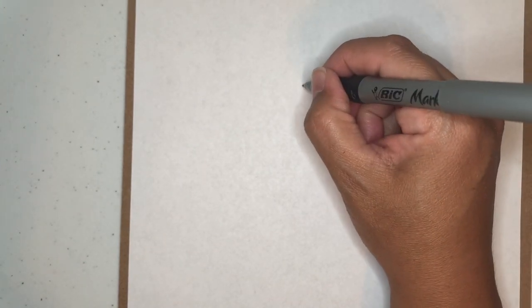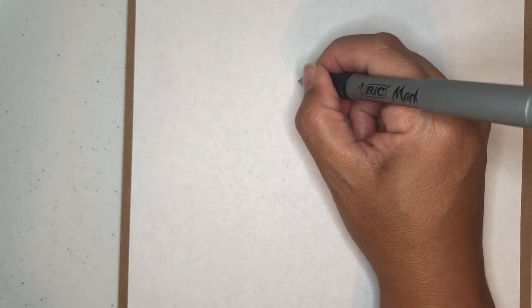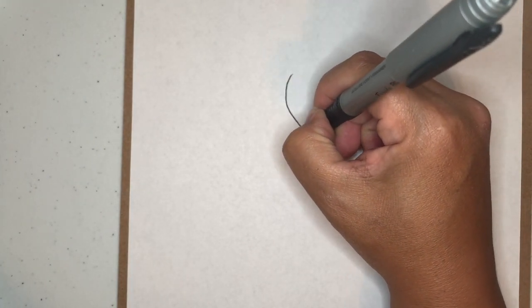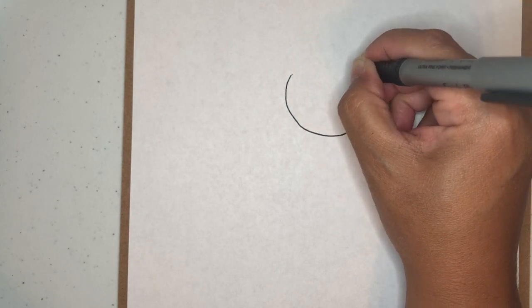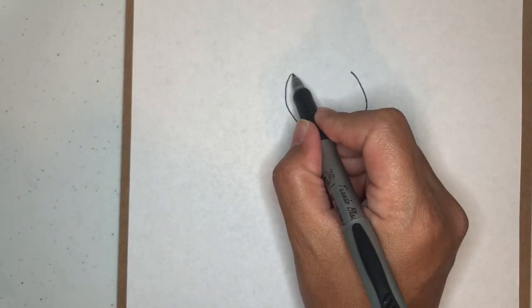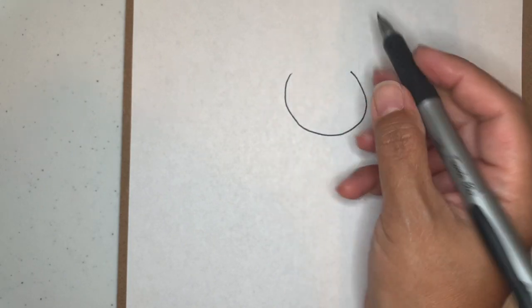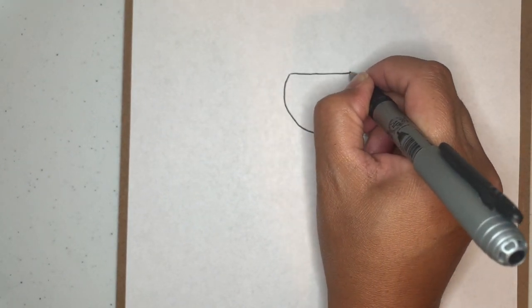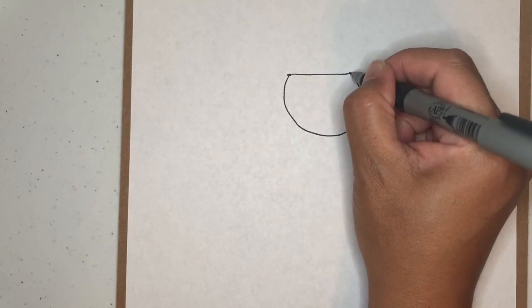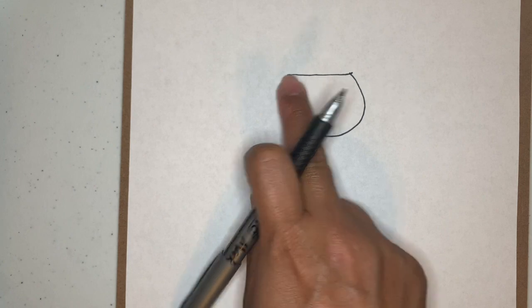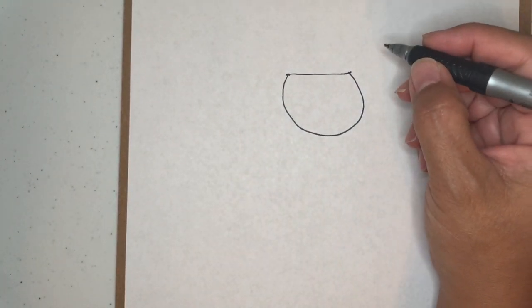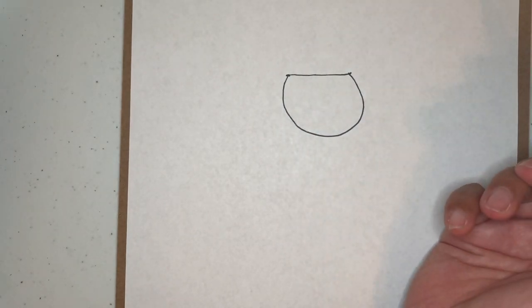So what we're going to start with is the face. So you need a semicircle, or a circle that is not completed. So you're going to, almost like a U, and then see how it's open up here? You're going to connect the two parts, the opening, the two points from here to here. Just draw a line towards the top, or I mean, across the top of the face.